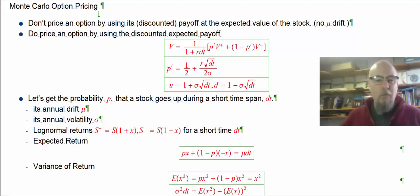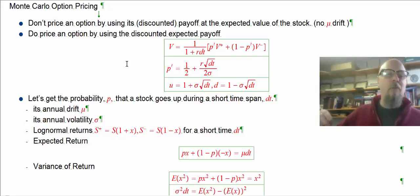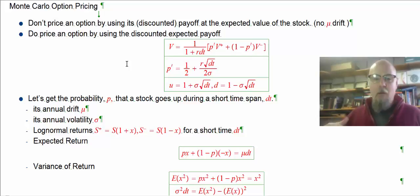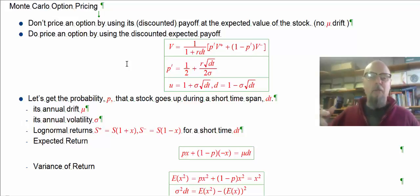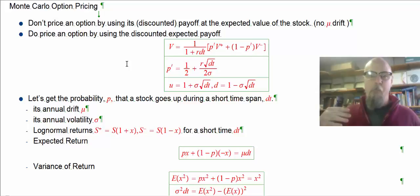We'll need to get the average value, or mean value, of the stock. We know we don't price an option by using its discounted payoff at the expected value of the stock, because the expected value of the stock has the drift in it. If the drift is higher, the stock tends to go up — the probability of the stock going up is higher — and we know that the drift is not a factor in pricing an option.